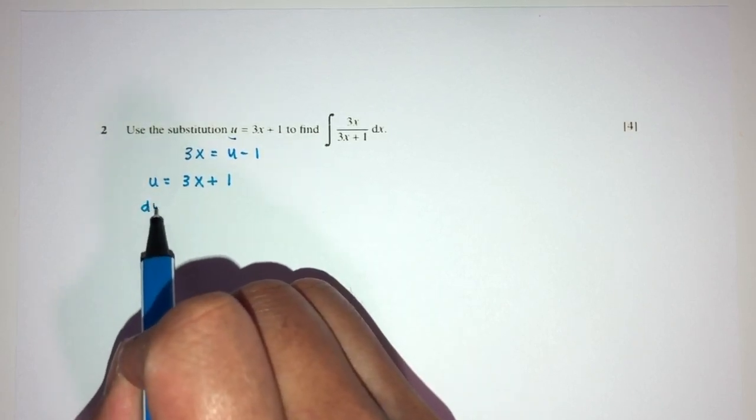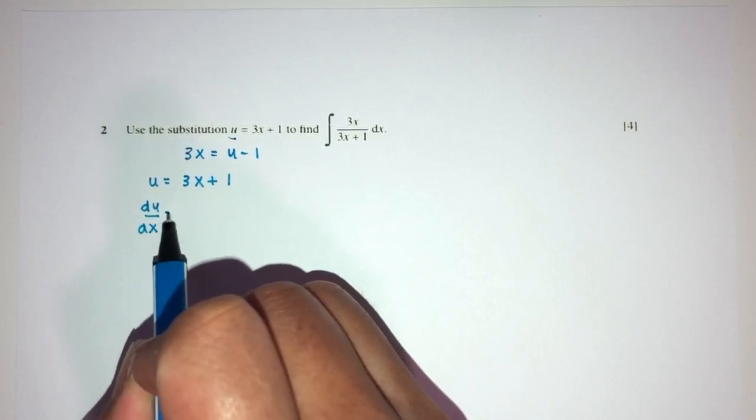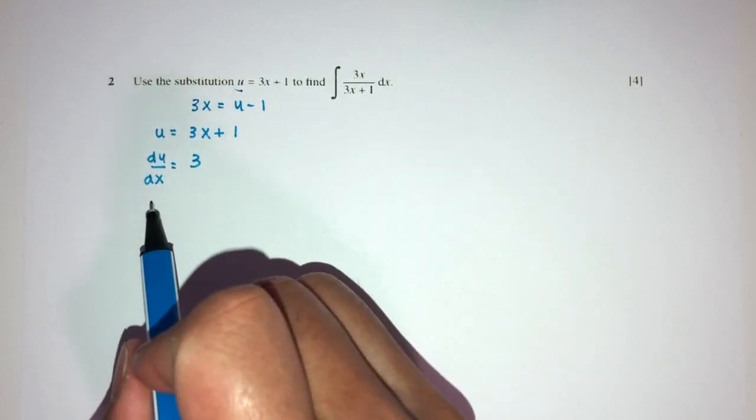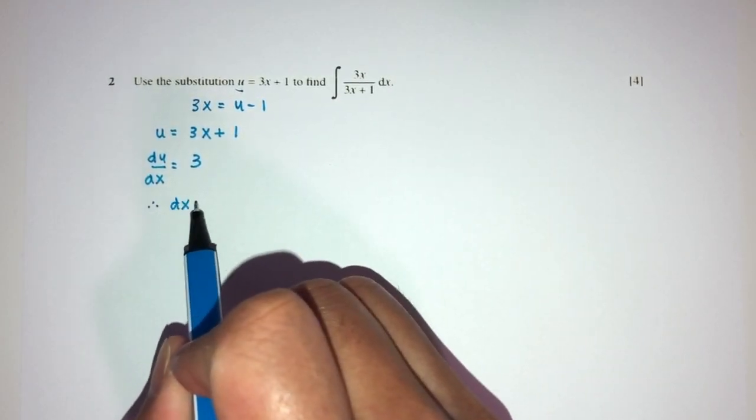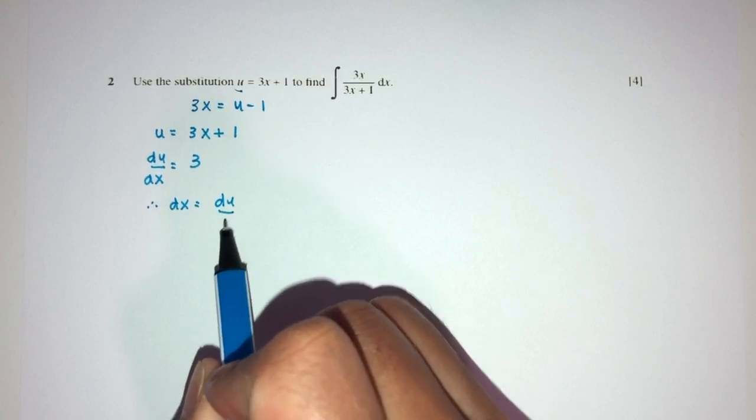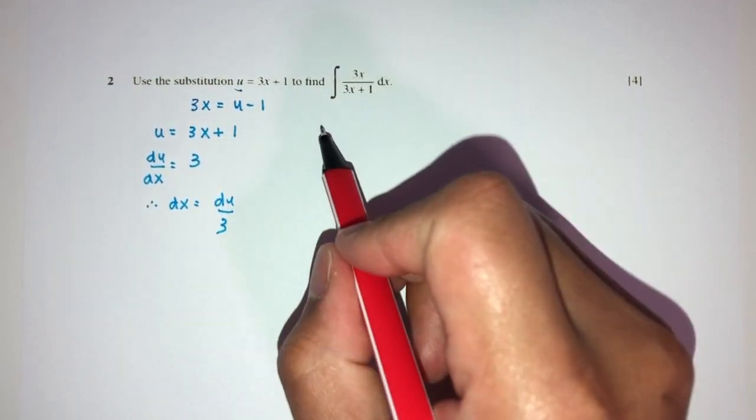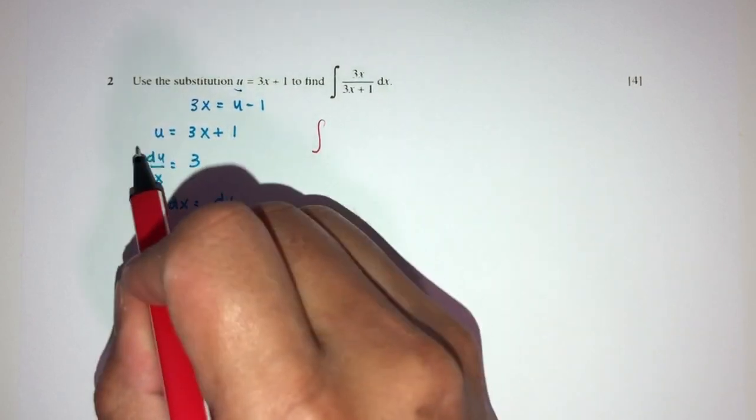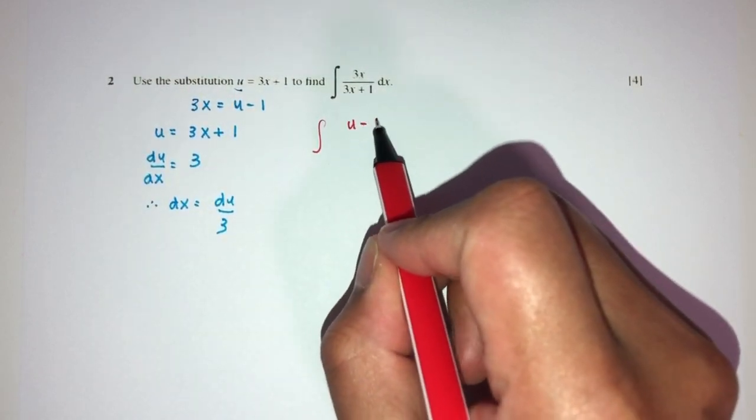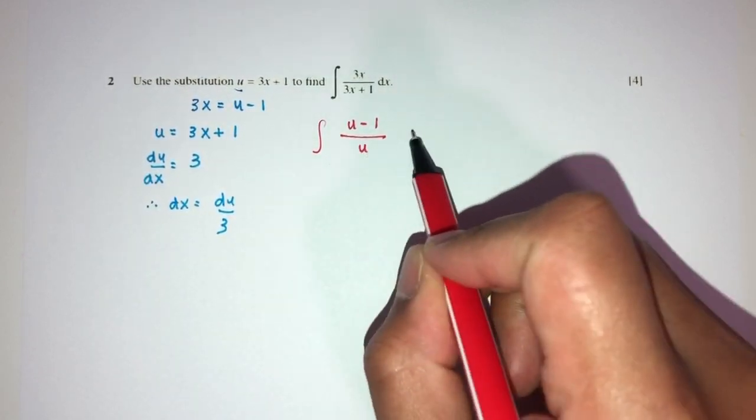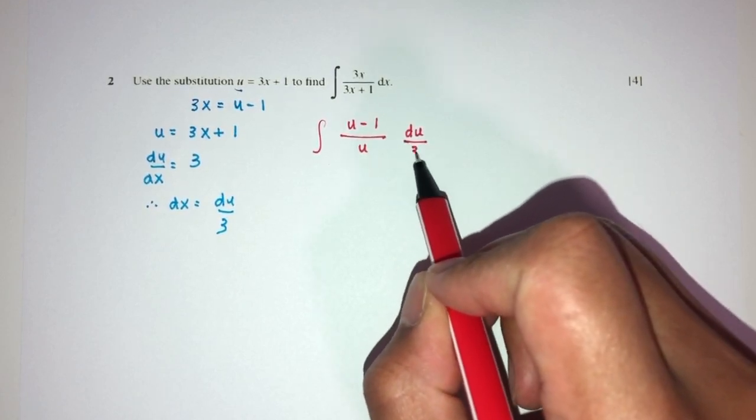Here we have dx, so we have to find u was given to you by 3x plus 1. So du by dx will be differentiated, that will be just 3. Thus, from here you can see dx has to be du over the value of 3. Now we place everything back in here. You have integration of u minus 1 divided by u du, and this is over the value of 3.